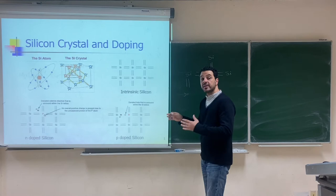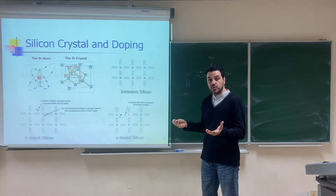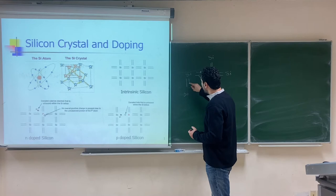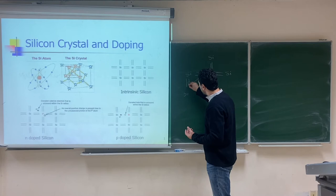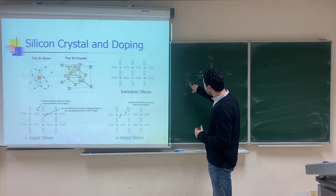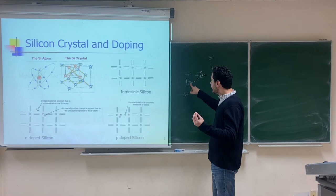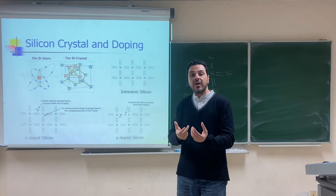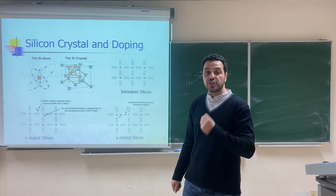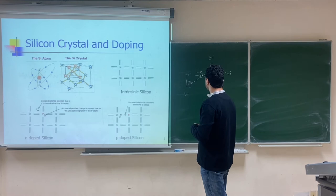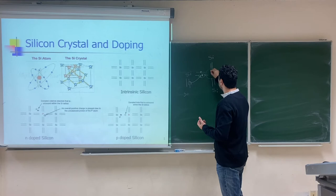We treat the hole as a positive charge. Due to thermal effects, another bond in the crystal can break, and an electron from that bond will go fill the hole. When that electron moves to fill the hole, effectively the hole moves in the opposite direction. So if the electron moves in one direction, the hole moves to the opposite direction — that's why we treat the hole as a positive charge.